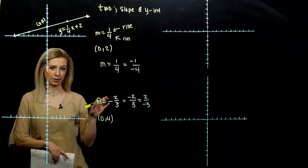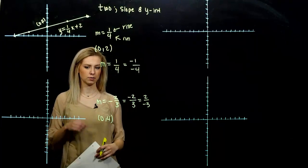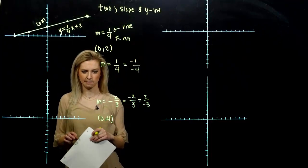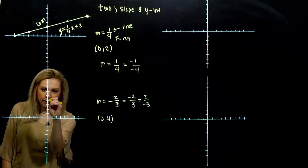If I give it to both, what happens? It turns into a positive. We're changing it all together. So when we have one negative, we can give it to the top or to the bottom, but not both at the same time. I still know it's going through the point zero, four. So we'll mark our y-intercept.